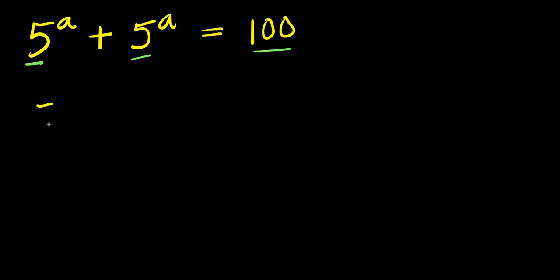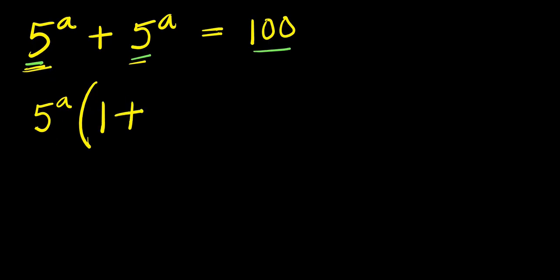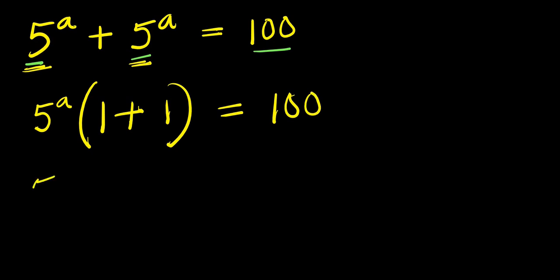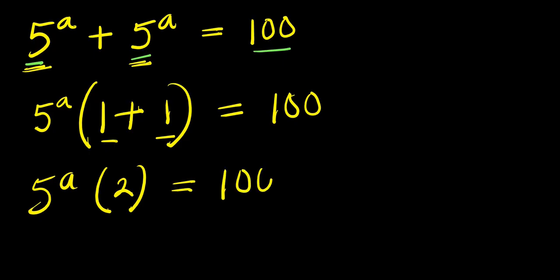We have 5^a — we can factor it out because it appears here and here. 5^a divides 5^a gives 1, plus 5^a divides 5^a gives 1, and this equals 100. So from here, we have 5^a times (1 + 1), that is 2, and this equals 100.